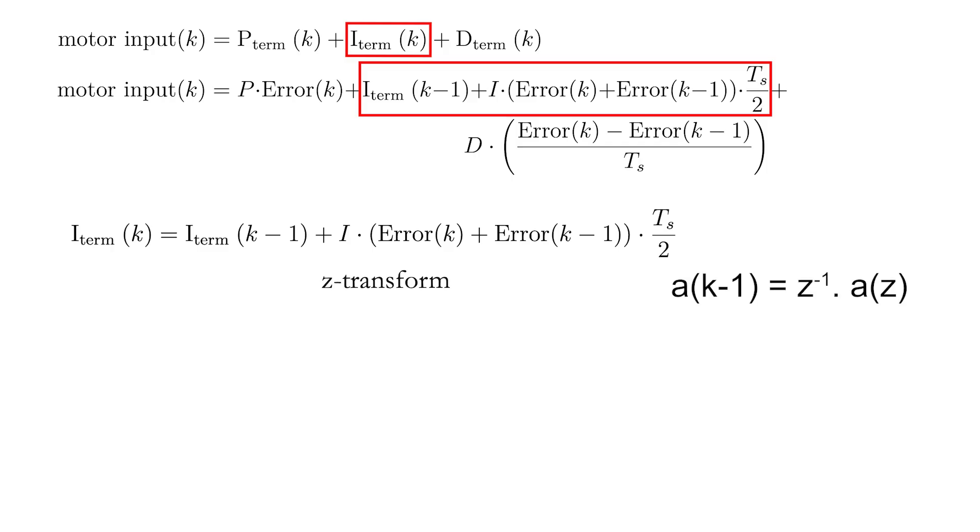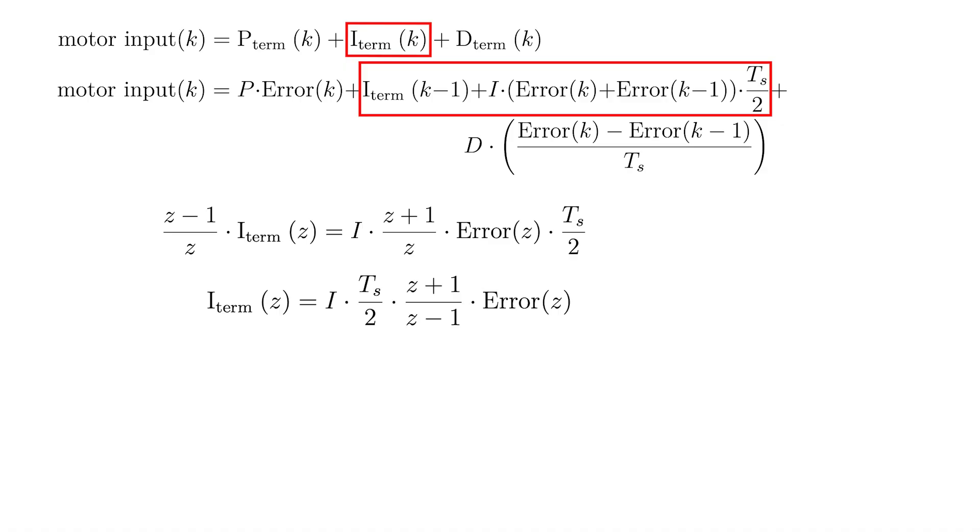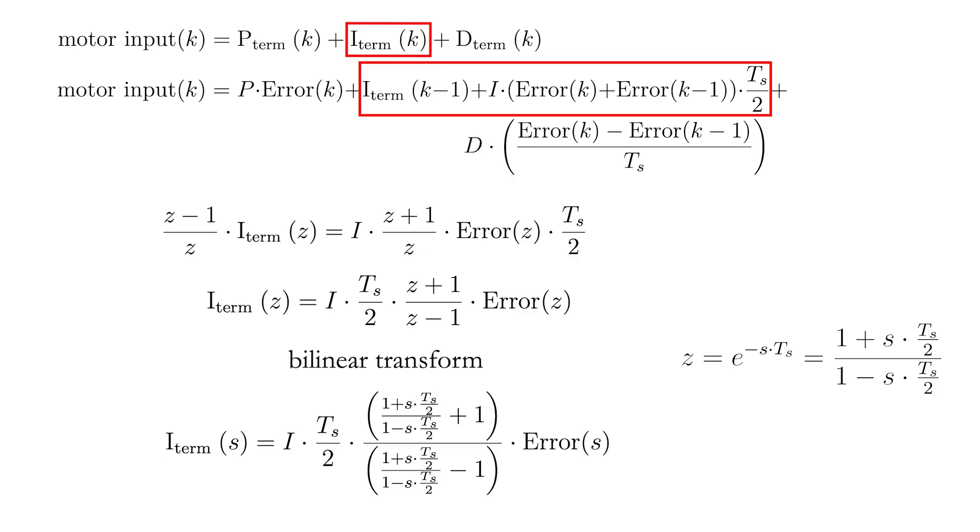Now, rewrite the equation a bit such that the I term can be displayed in function of the error. When the equation is rewritten, proceed with the bilinear or Tustin transform in order to go from the z to the s domain.